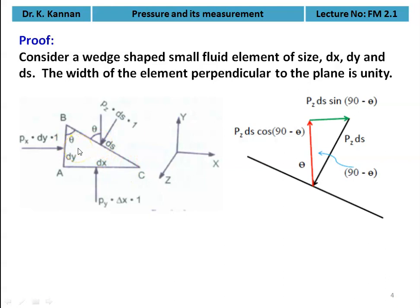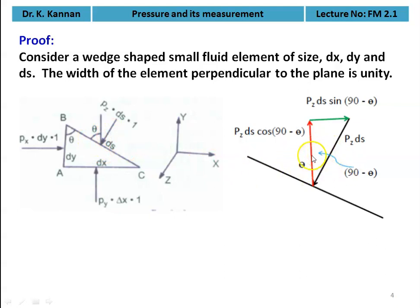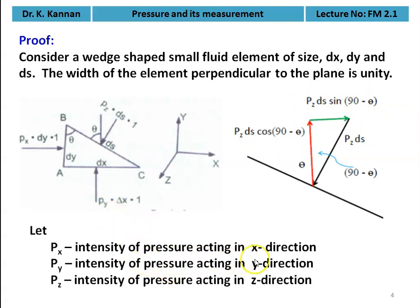The force pz·ds acting perpendicular to the slant plane can be resolved into vertical and horizontal components. The angle is theta, so the vertical component is pz·ds·cos(90−θ) and the horizontal component is pz·ds·sin(90−θ). Here, px is the intensity of pressure in the x-direction, py in the y-direction, and pz in the z-direction.